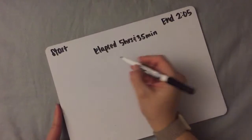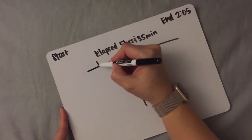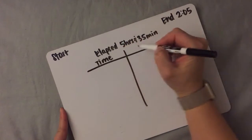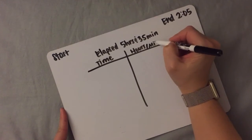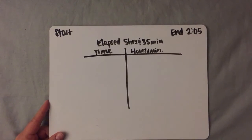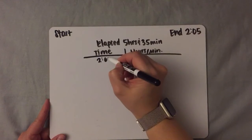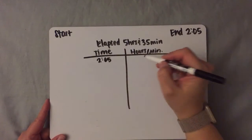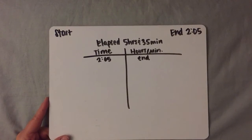You make your T-chart as usual, with the time on the left and the hours and minutes that you'll keep track of on the right. Because you know the end time, you're going to put it here on the left — that's 2:05 — and you will label it 'end.' On the right, it's easiest to count back by hours.